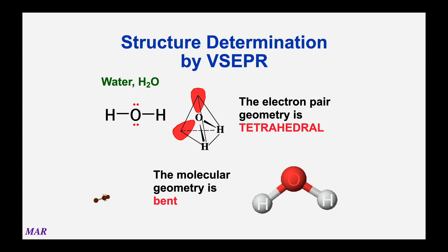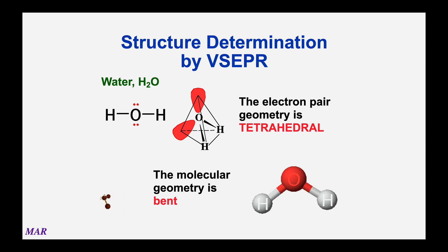Both electron pair geometry and molecular geometry have uses. Electron pair geometry is arguably the most important — all electron pair geometries that are tetrahedral are about 109 degrees. From the electron pair geometry, you can figure out the molecular geometry. Ammonia had one lone pair, so the molecular geometry was trigonal pyramid. Water has two lone pairs, so molecular geometry is bent. If the molecule has no lone pairs, then the electron pair geometry is the same as the molecular geometry — CH4 has no lone pairs around the carbon, so EPG and MG are both tetrahedral.